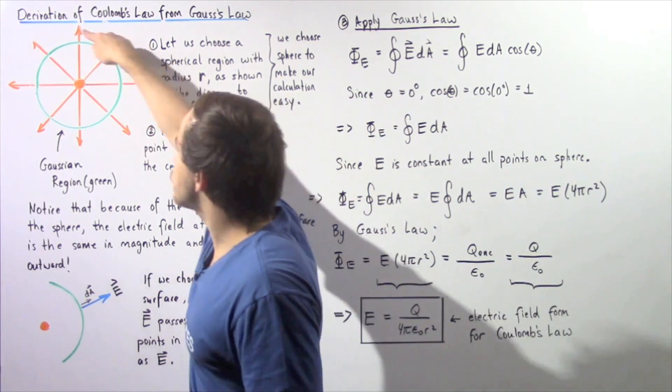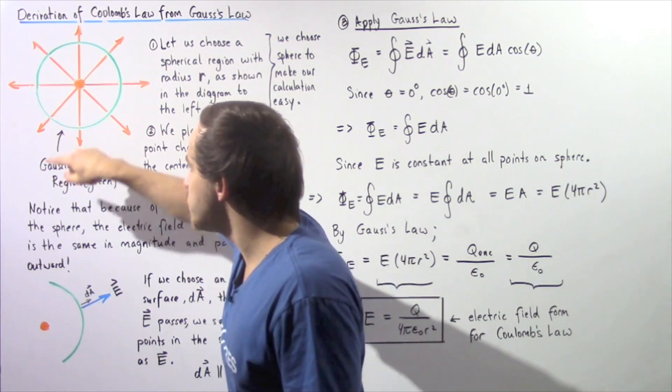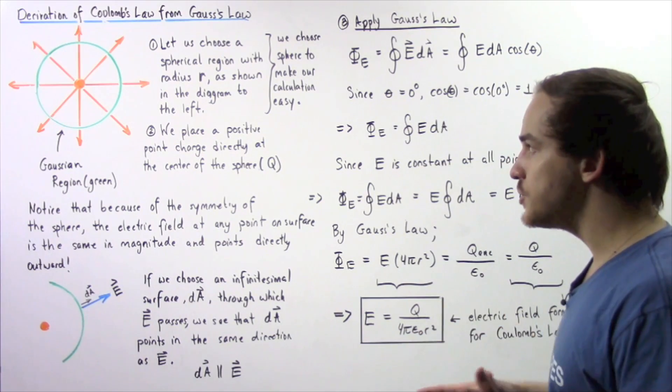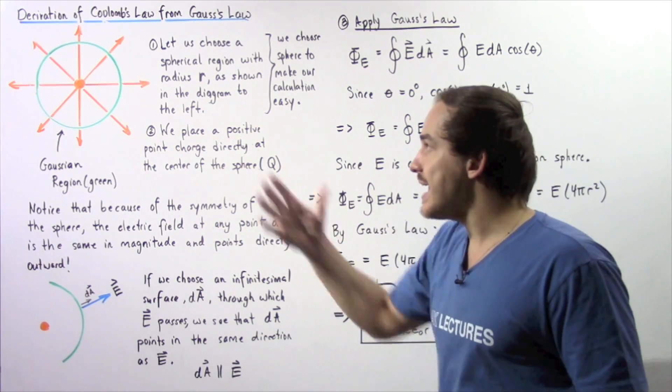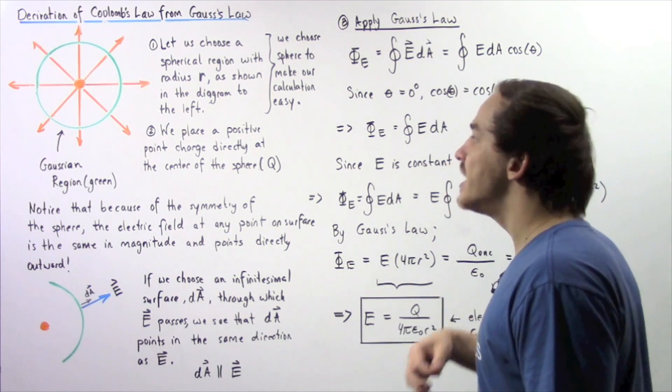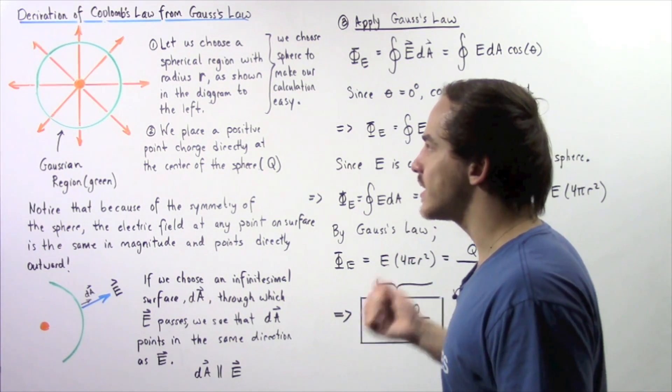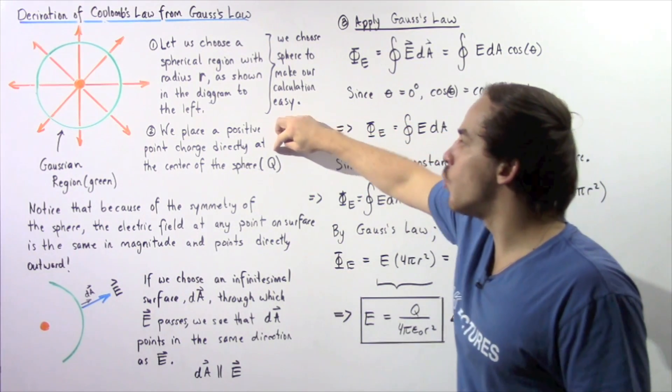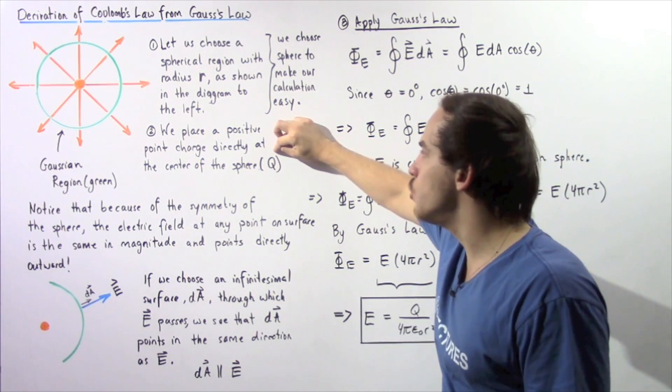This green section is our chosen Gauss's region, which is a three-dimensional region. Next, we take a positive point charge, and we place that positive point charge directly at the center of our sphere, and we let that charge have quantity of uppercase Q.